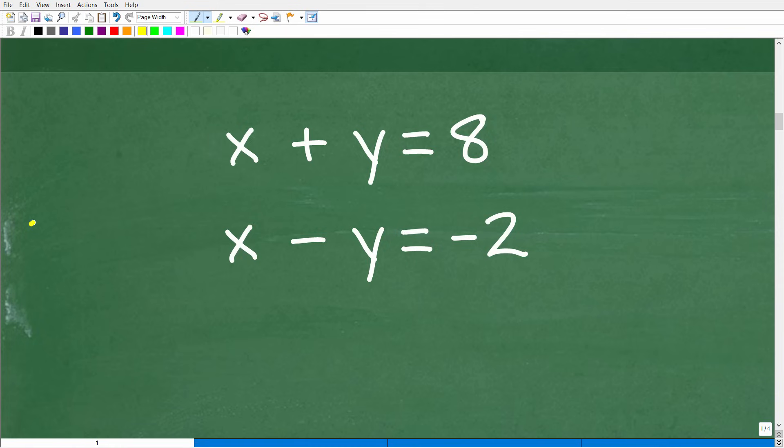All right, so we talked about how we could graph these lines and then find the point of intersection. That's actually called the graphing method. And if you had graphing paper, you could actually do this, but that's not a practical method. What we want to do here is use algebraic methods to solve this system. And there's basically two main methods. There's the substitution method and there's the linear combination, sometimes referred to as the elimination method. They're both equally good, and you need to know both. Okay, and you use one method,